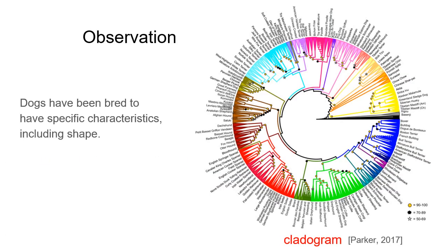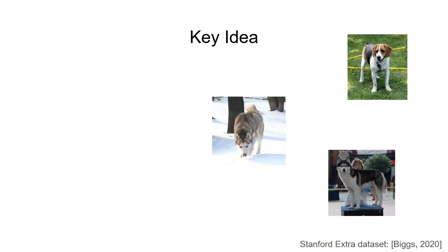So how can we learn to estimate 3D dog shapes? We observe that dogs have been bred to have specific characteristics, including shape. In lieu of detailed 3D information, our idea is to use the breed relationships as a form of side information.